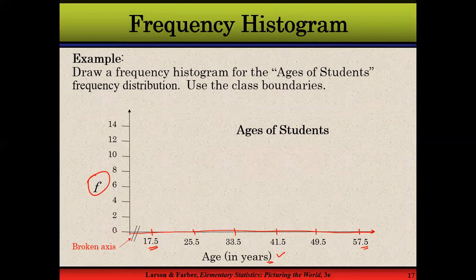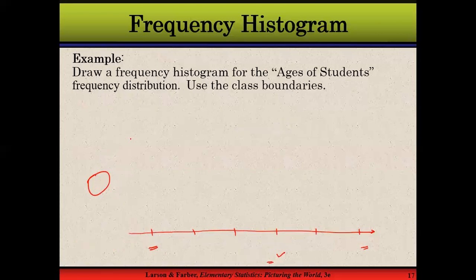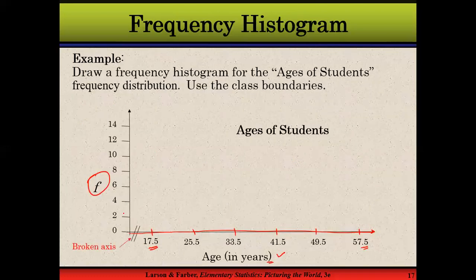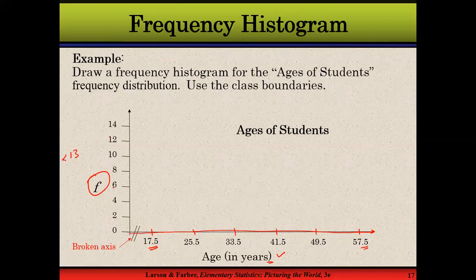The frequency scale on the vertical axis starts from 0 and goes up to 14. Why up to 14? Because the maximum frequency value in the data is 13, so the scale must be exhaustive enough to contain all frequency values. We go to 14 to be on the safe side. The scale is divided into intervals of 2, so the points are at 2, 4, 6, 8, and so on.